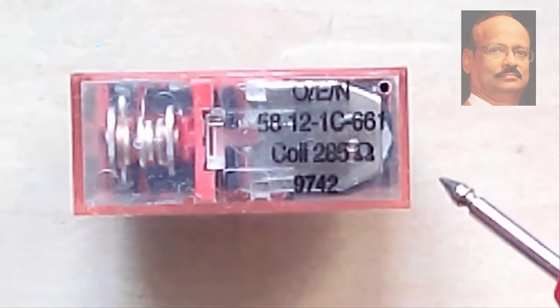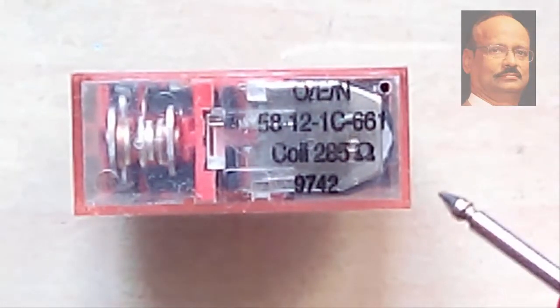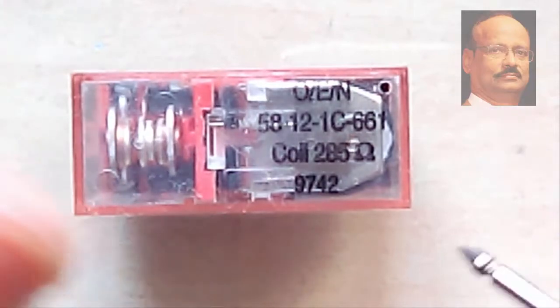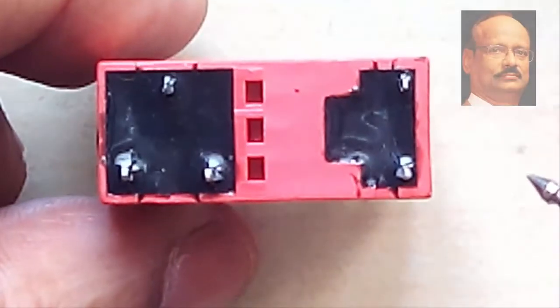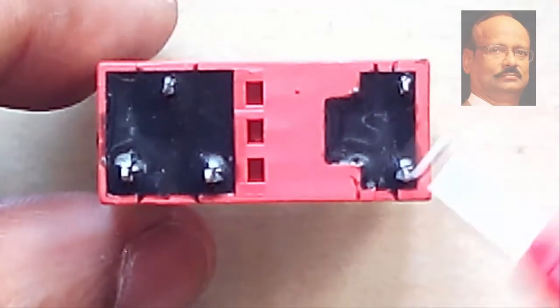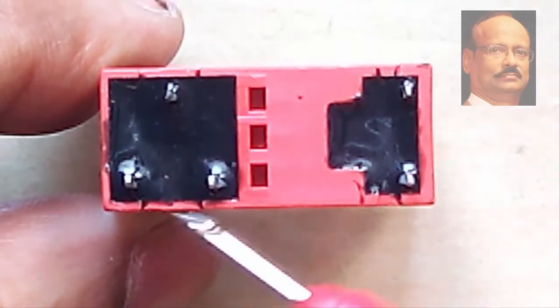So far what we have discussed is 1CO. That means one common point, one NO, and one NC. That is how they are called. And here these are the coil points. And this is the common point. This is NO and NC.